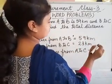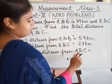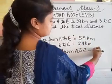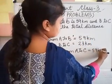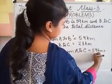We will add both. Total means hamay addition karna hai. So we will add now and write 59 km plus 23 km.